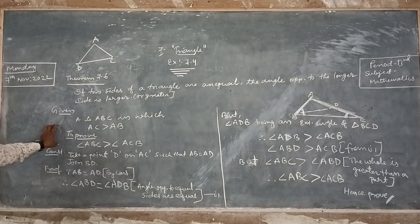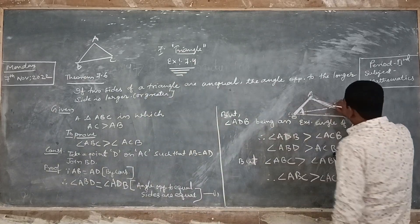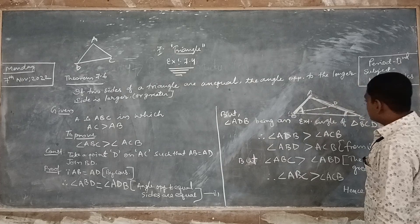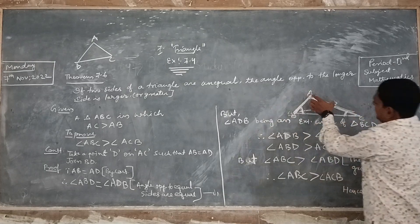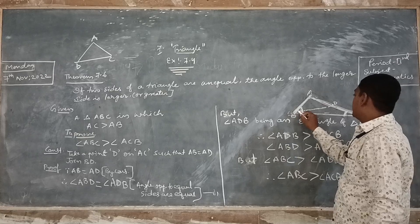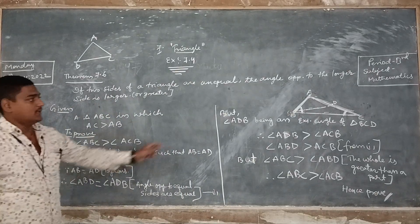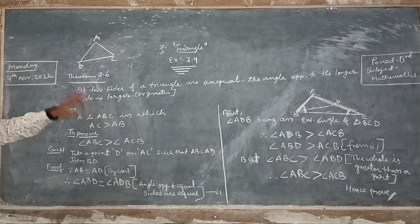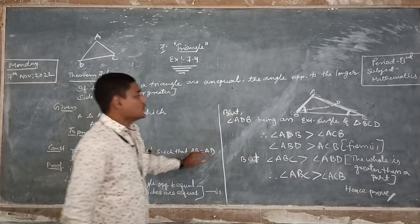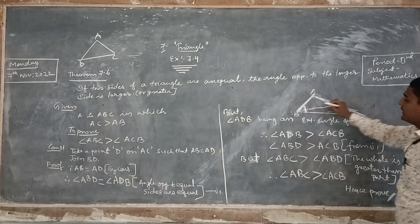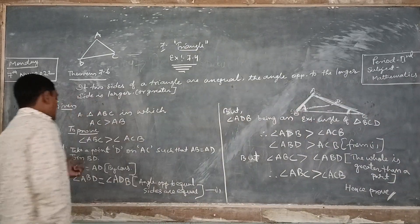For this, first of all we have to do some construction. We will take a point D on AC such that AB is equal to AD. Then we join BD.